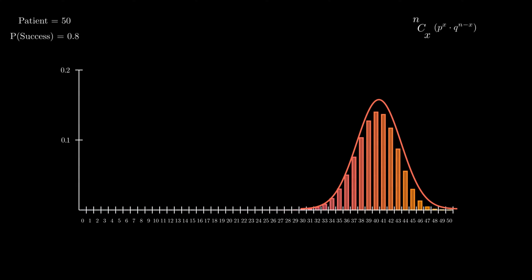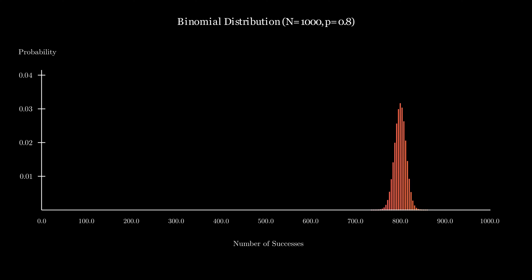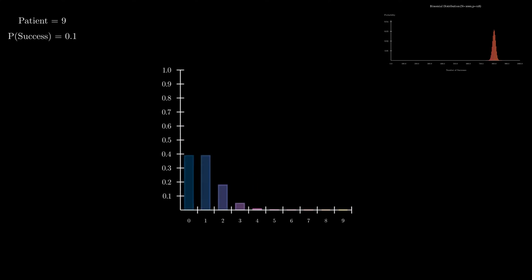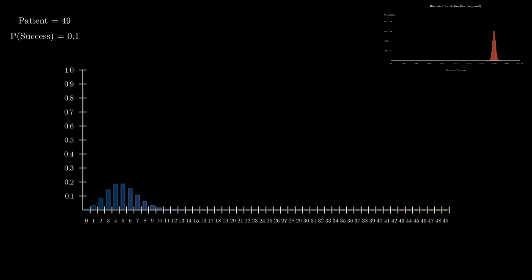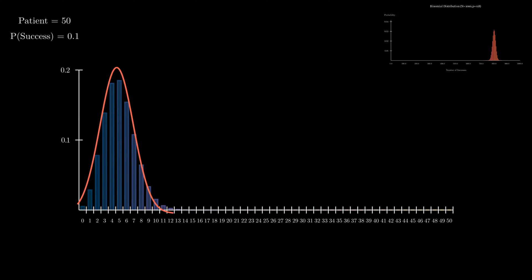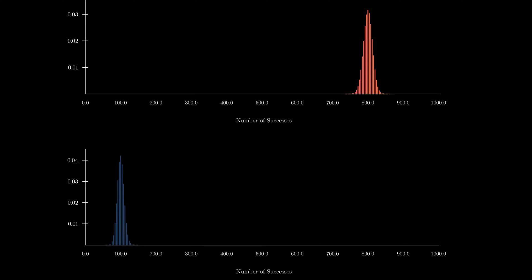Now let's decrease the probability of success to 0.10 and again increase n. After increasing n significantly, we again get a normally distributed shaped curve. The difference between the two curves is that the first centers around 800 on the x-axis and the second around 100 — because 800 and 100 are the respective means n·p. So increasing n converts the binomial distribution into a normal distribution, as we have seen visually.